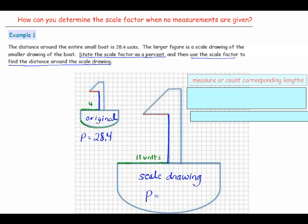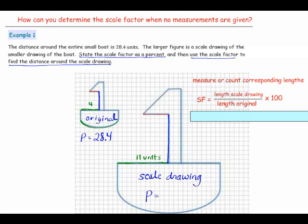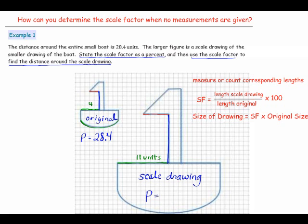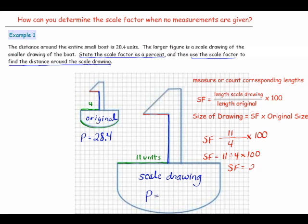Once you have measured or counted your corresponding lengths, you calculate your scale factor. That is, the length in the scale drawing divided by the length in the original times 100, and that will state your scale factor as a percent. The length in the scale drawing is 11, and the length in the original is 4. So, 11 divided by 4 times 100 gives us a scale factor of 275 percent.